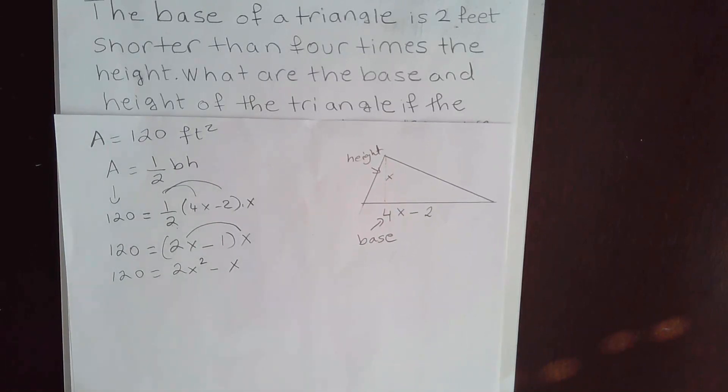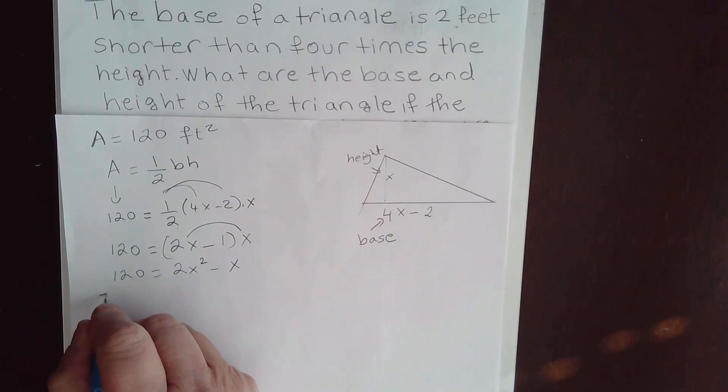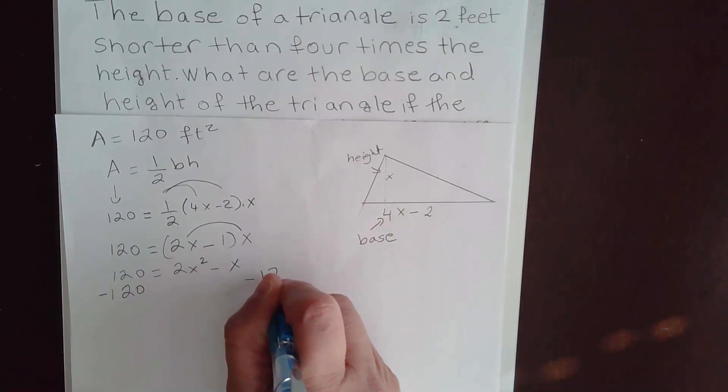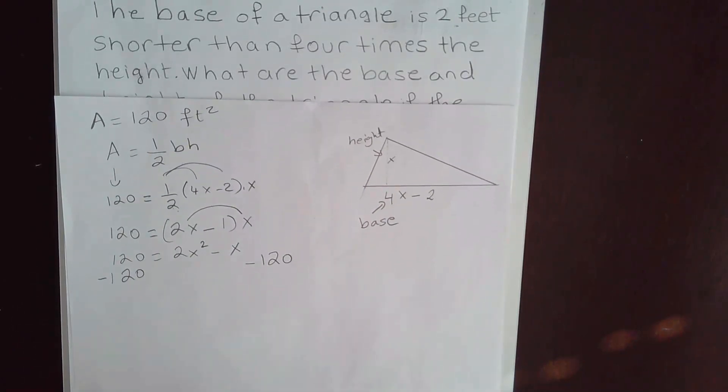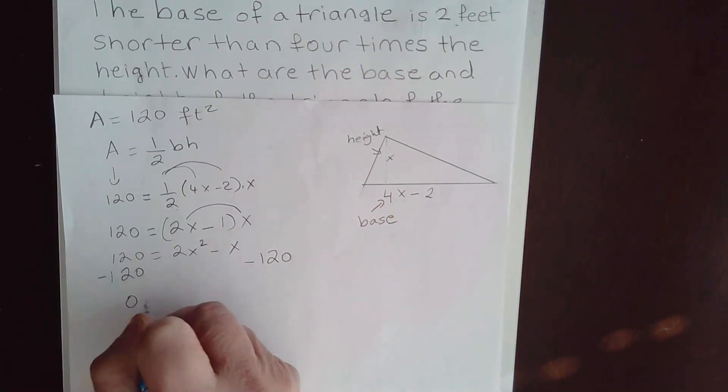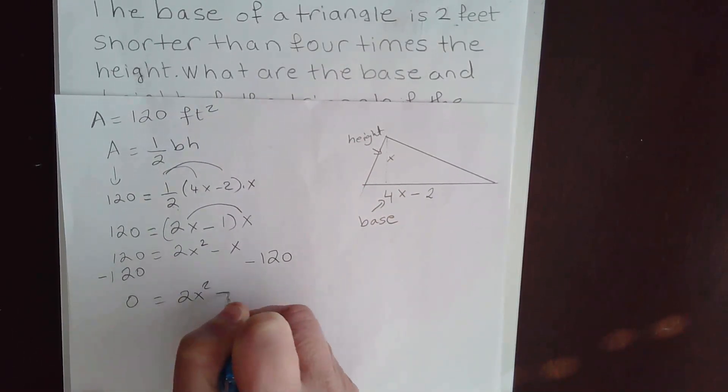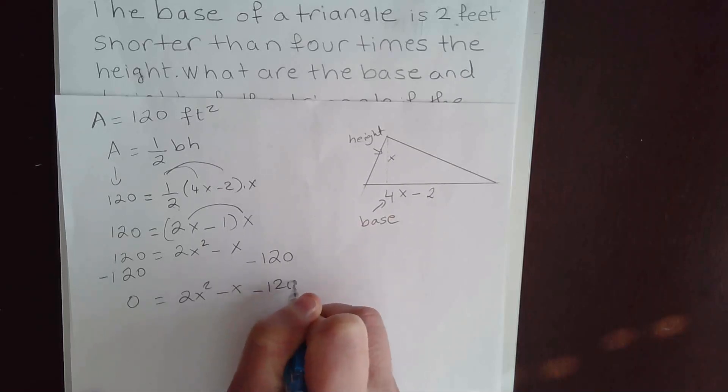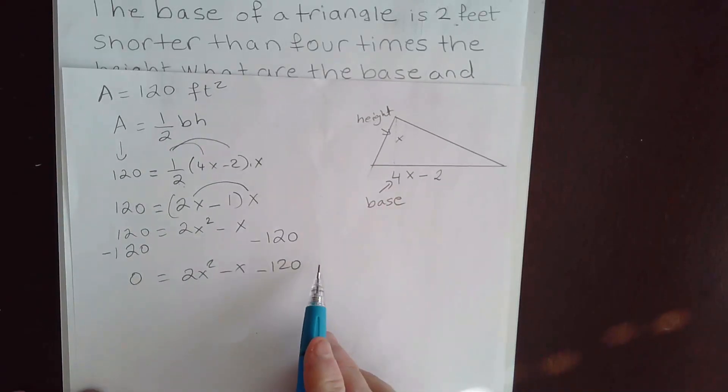Now, this is a quadratic equation. We need one side to be equal to 0. So I need to subtract 120 on both sides. Okay. So now this side becomes 0 equal to 2X squared minus X minus 120. You can if you want to put the 0 here. That's fine.